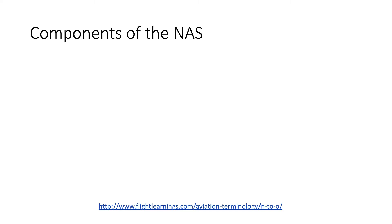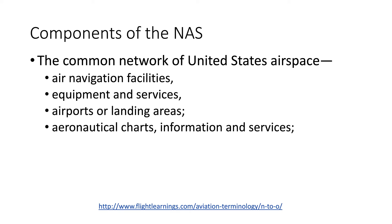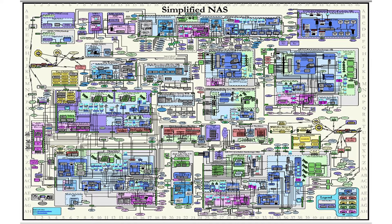The National Airspace System includes air navigation facilities, equipment and services at airports or landing areas, aeronautical charts and information and services, rules, regulations and procedures, technical information, and manpower and materiel. According to the FAA, even a simplified view of the NAS is extremely complex, with information feeding from systems into subsystems to maintain the security, reliability, and efficiency of the entire system.